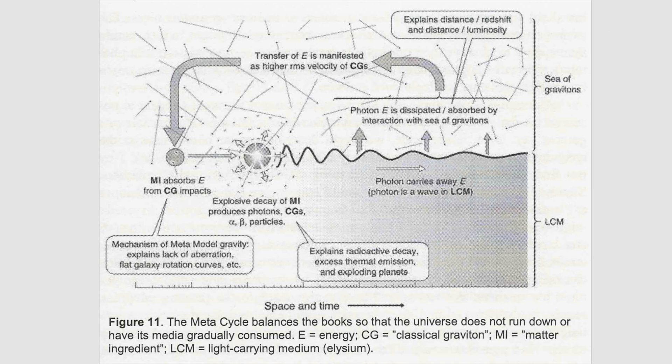This removes one of the main objections to the tired light models as an explanation for cosmological redshift. This mechanism also restores the energy to the graviton medium which is lost when the gravitons were absorbed by matter objects that later emit the light wave. This extra energy ensures that the average speed of the graviton is always maintained. When a new matter object forms from an interstellar cloud this balance is once more restored. Numbers, energy and momentum are all balanced. The universe is not heating up nor cooling down.